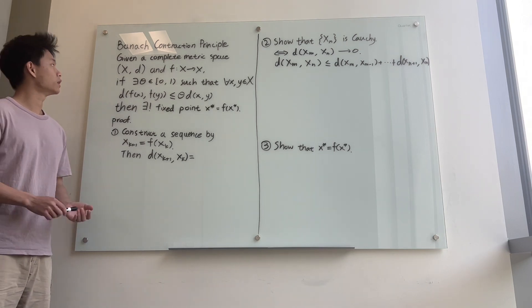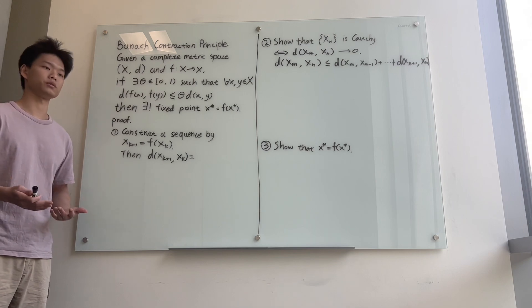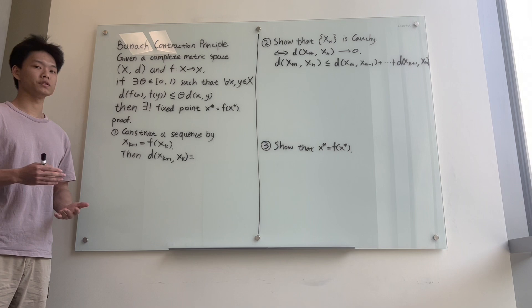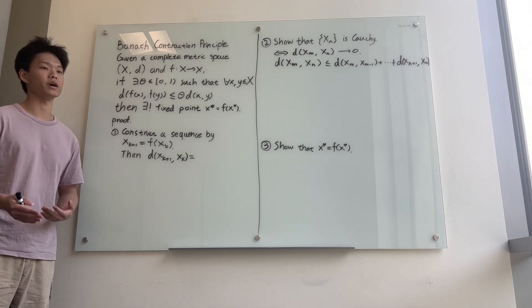Here's what the theorem says. Suppose we are given a complete metric space (X,d), meaning every Cauchy sequence converges, and a function f on the space. If there exists a non-negative theta less than 1 such that for every x and y in X,